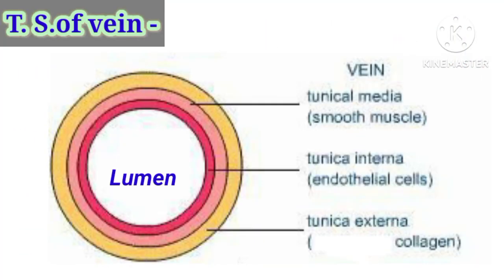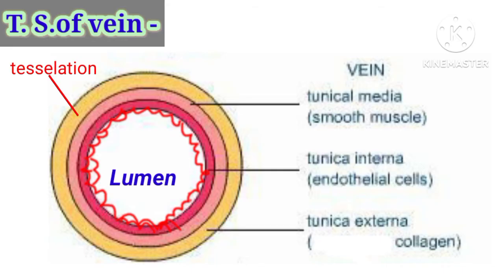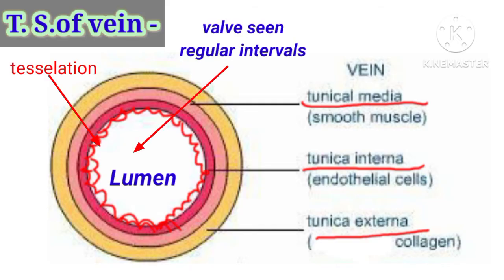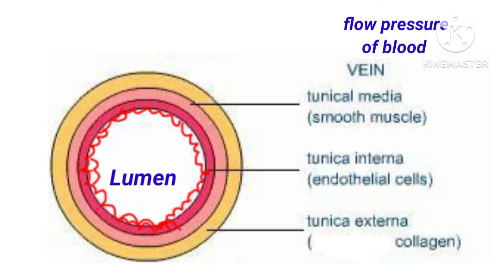Veins also show three layers like arteries: tunica externa, tunica media, and tunica interna. The tunica media is comparatively thinner, and the lumen is wider than that of arteries. Valves are present at regular intervals, and blood flows through veins at low pressure.